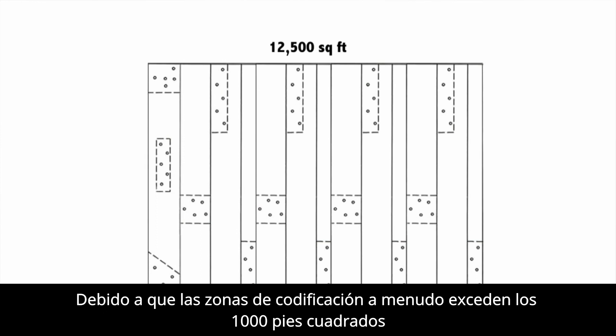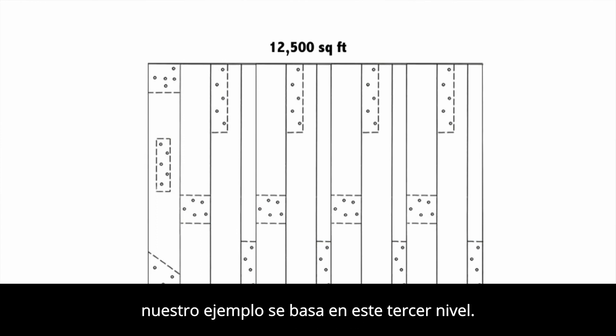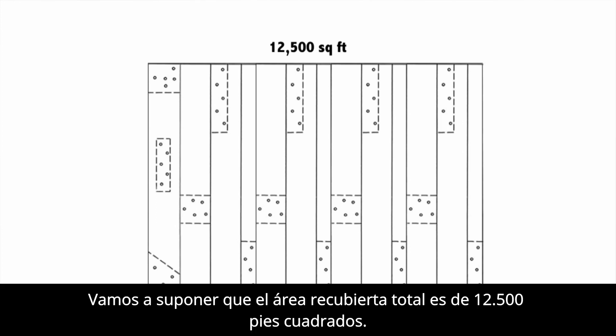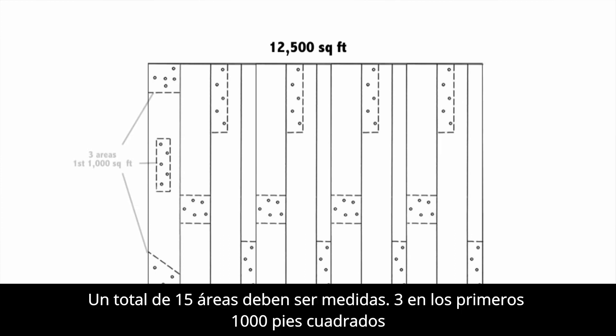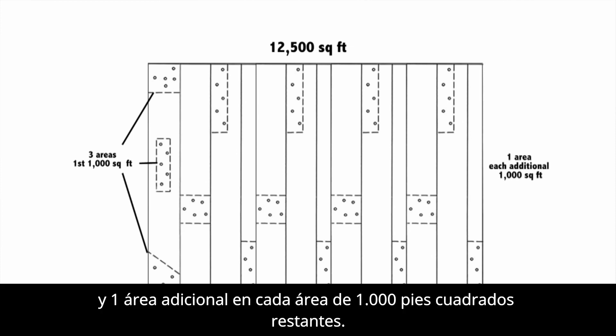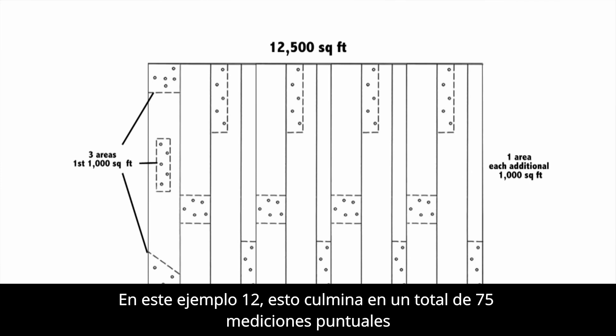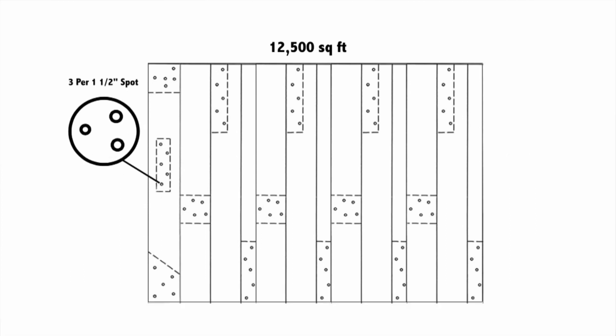Because areas of coating often exceed 1,000 square feet, our example will be based on this third tier. Assuming the total coated area is 12,500 square feet, a total of 15 areas must be measured — three in the first 1,000 square feet and one additional area in each remaining 1,000 square foot area or portion thereof, in this example 12. This culminates in a total of 75 spot measurements and a minimum of 225 gauge readings.